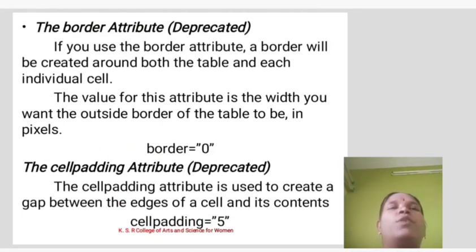The border attribute: If you use the border attribute, a border will be created around both the table and each individual cell. The value indicates how wide you want the outside border of the table to be in pixels. Example: border equals 0. The cell padding attribute is used to create a gap between the edge of a cell and its contents. Example: cell padding equals 5.